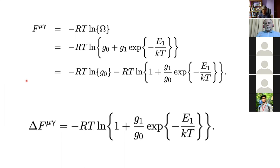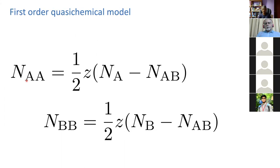For a system of A and B atoms, the number of AA bonds is simply the total number of A atoms minus the number of AB bonds — because those A atoms have been taken up in forming bonds with B and cannot contribute to AA. There's a factor of one half since we can't distinguish the two A atoms, and Z is the coordination number. Similarly, the number of BB bonds is the number of B atoms minus those occupied in forming AB bonds.